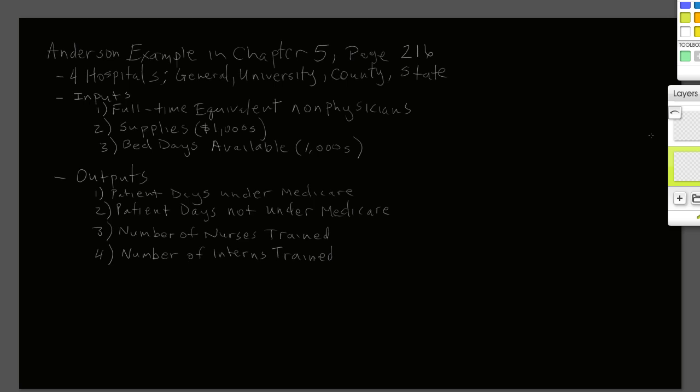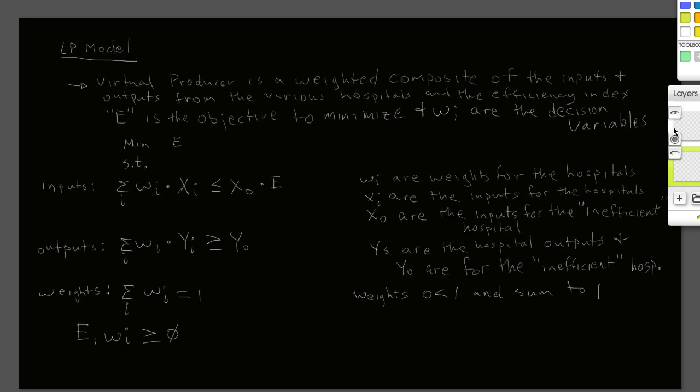The three inputs are full-time equivalent non-physicians, miscellaneous supplies, and bed days available in thousands, to produce four outputs: patient days under Medicare, patient days not under Medicare, number of nurses trained, and number of interns trained. The objective of this example is to find out if there is a hospital operating inefficiently relative to the other hospitals, and we can use a linear programming model to find this.